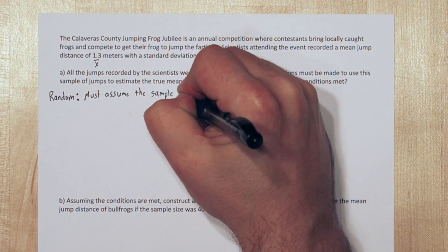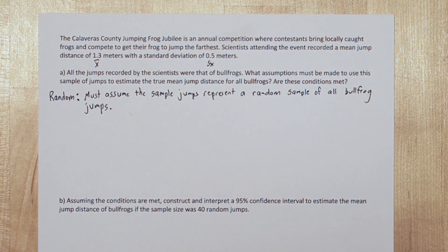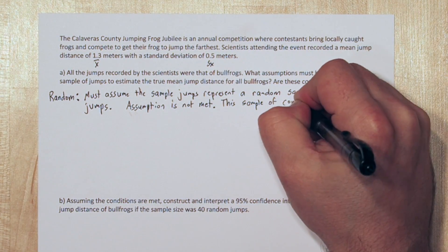The first assumption we'd have to make is the random assumption. We must assume the sample jumps represent a random sample of all bullfrog jumps. This assumption is not met.